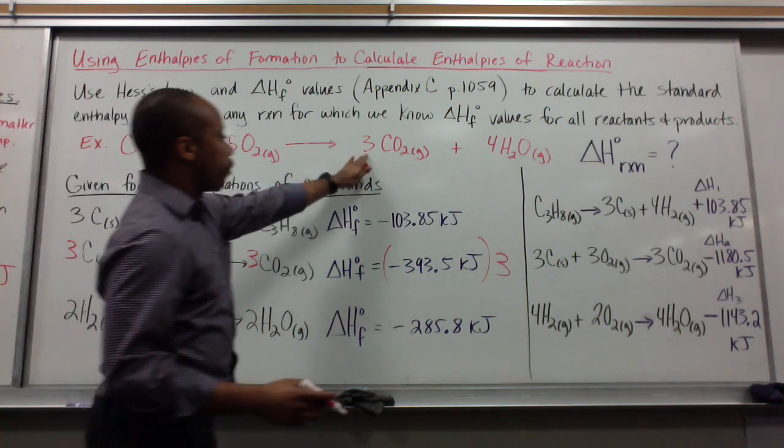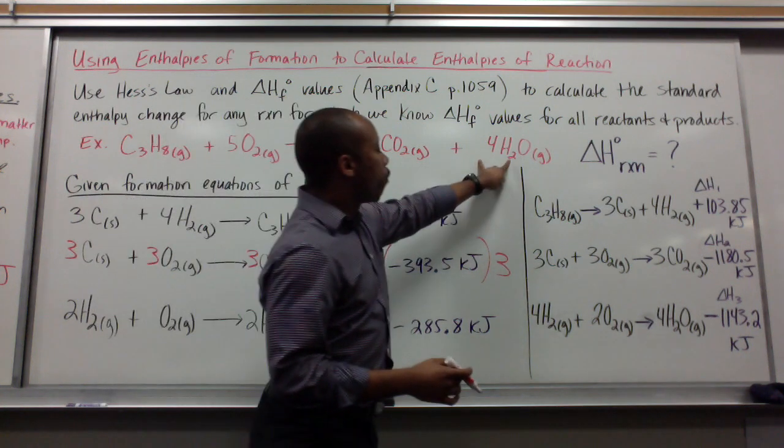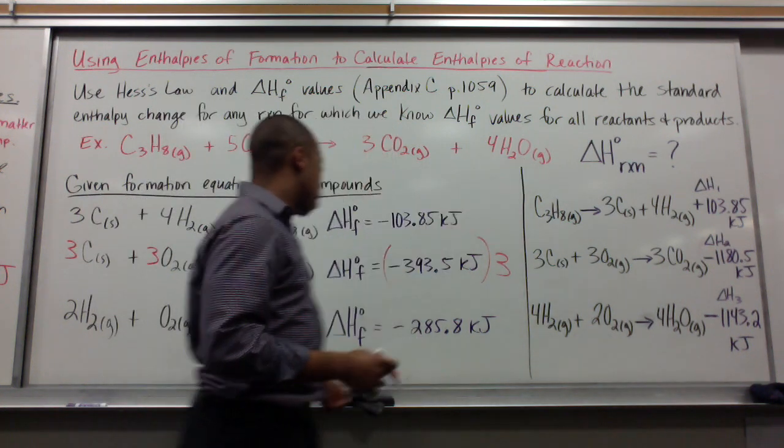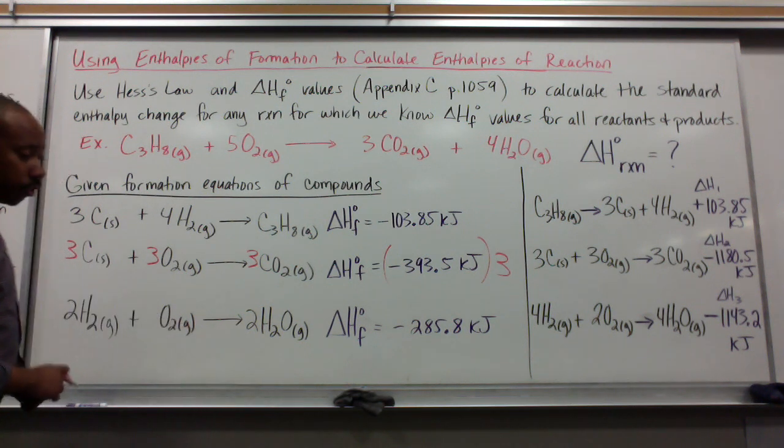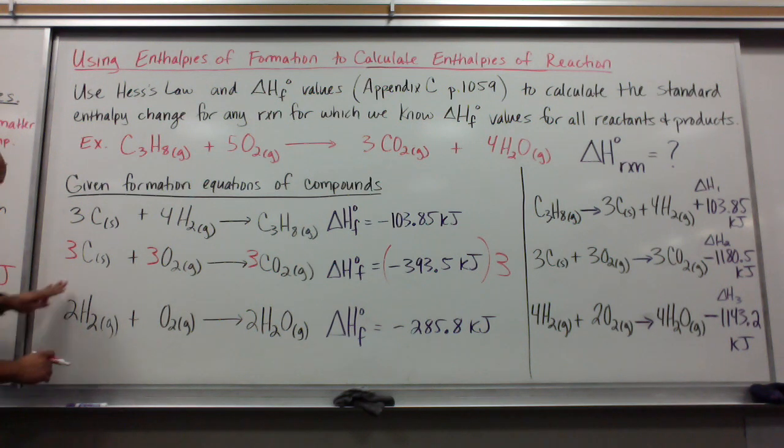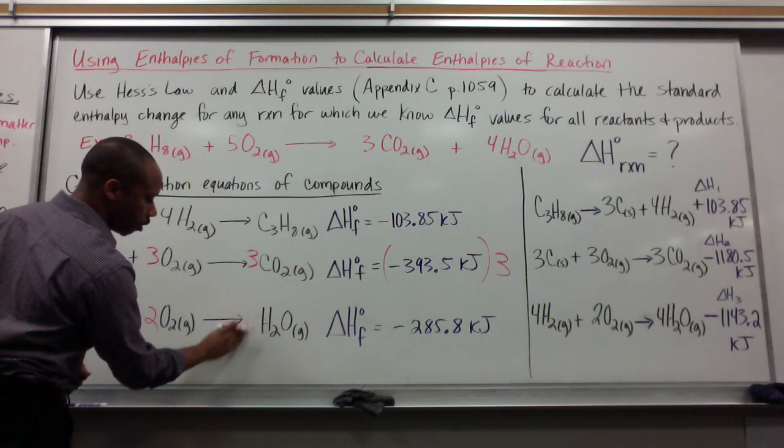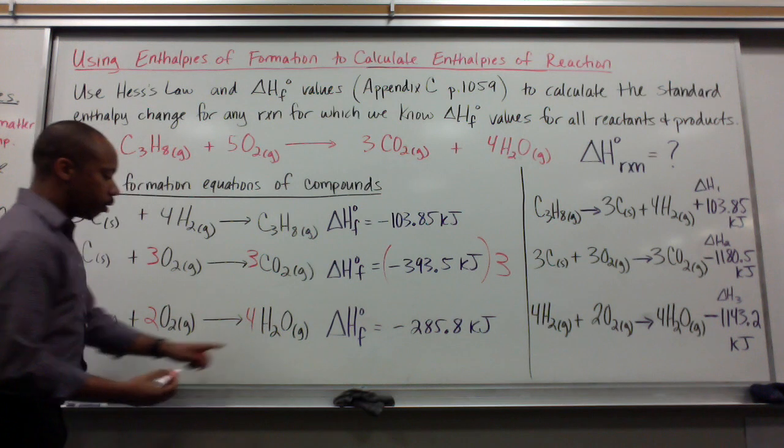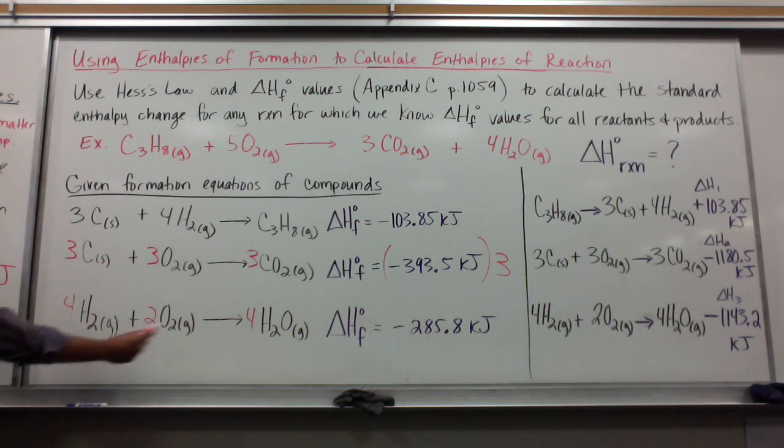Now, our carbon dioxide, we have three moles here, three moles there. Those match both in the product side. That's great. Now we have four moles of water here. Down here, we only have two moles. So we must change that. If we change this, we must change the entire stoichiometric relationship. So we have 4H₂ to 2O₂ to 4H₂O. I just multiplied everything times two.